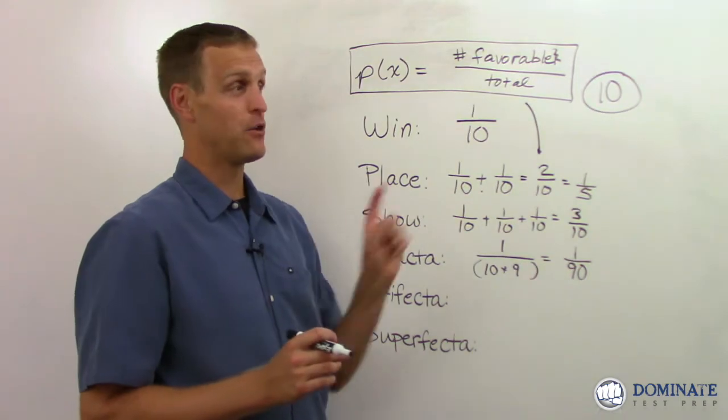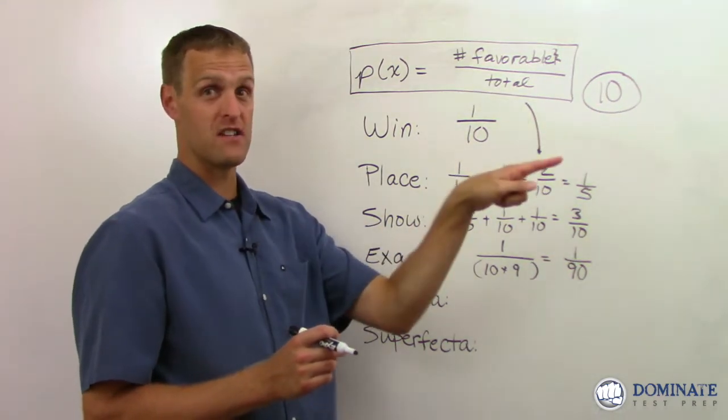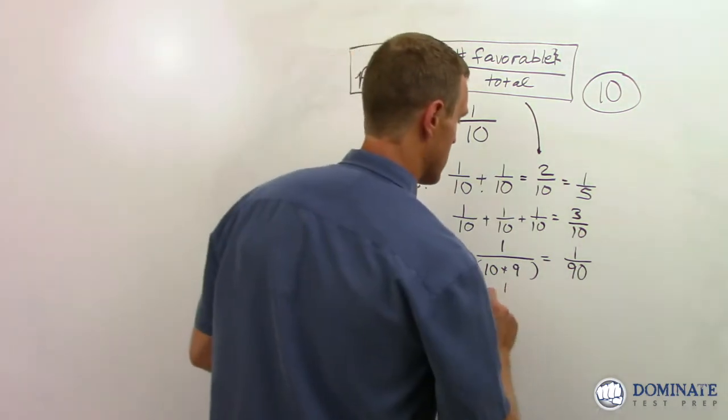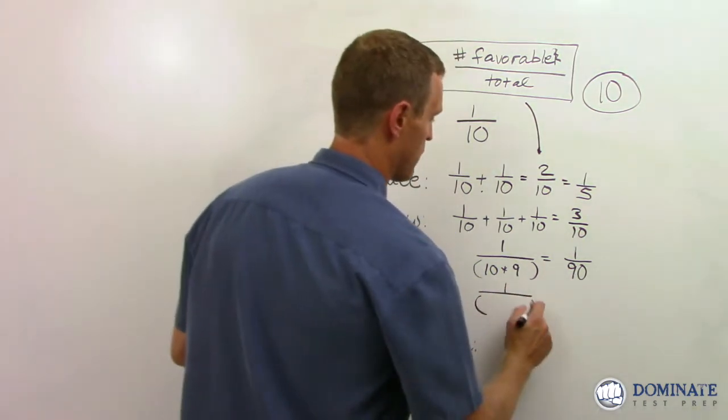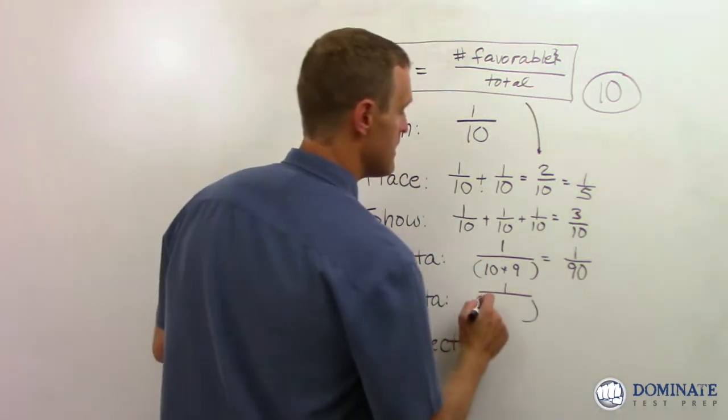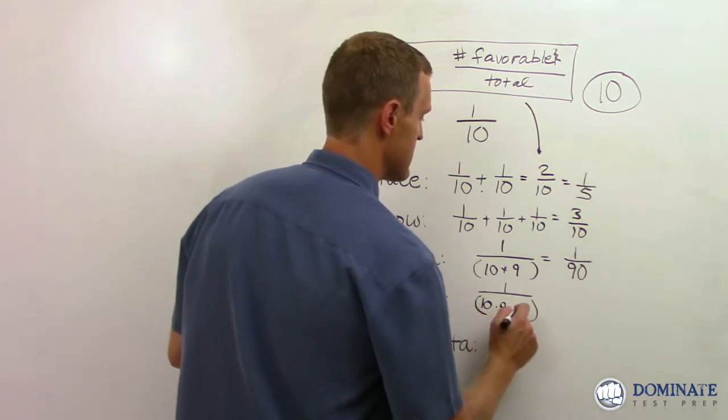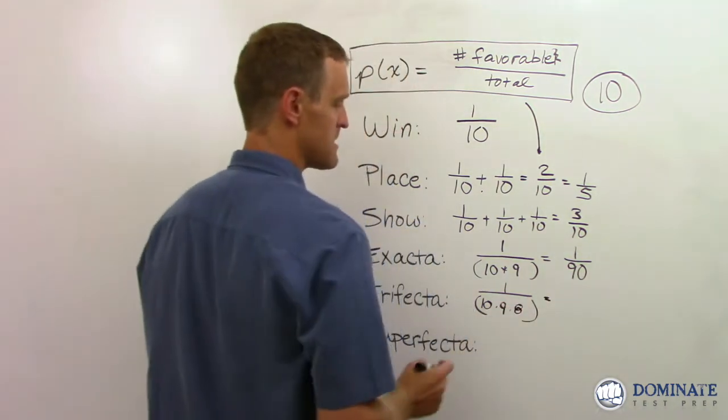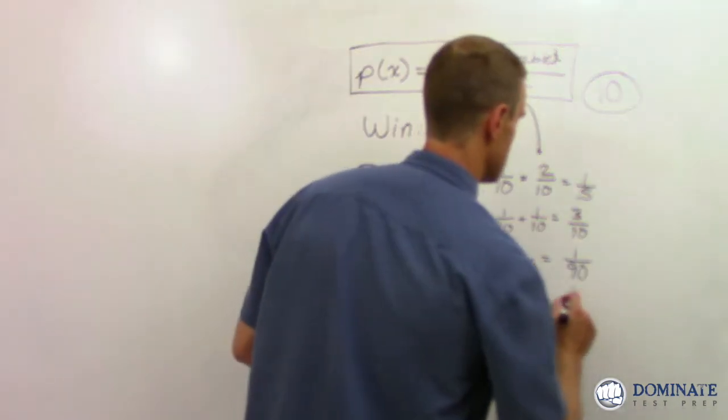That says, not only do I think I know which horse is going to finish first and second, I also think I know which horse is going to finish third. And if you pick those in order, the total outcomes, you have one shot out of 10 horses can finish first times nine can finish second times eight more can finish third. So that's nine times eight, 72 times 10 is 720.